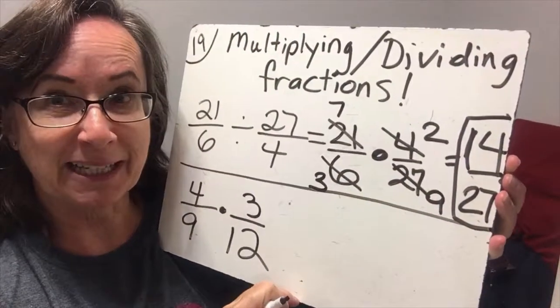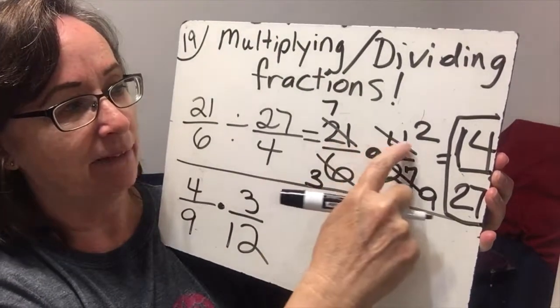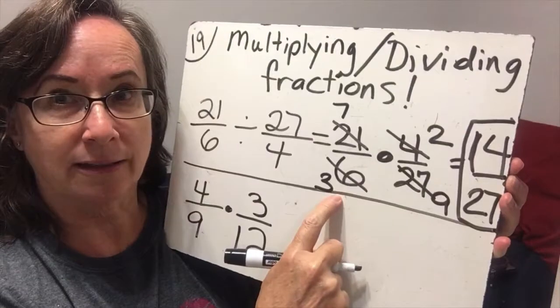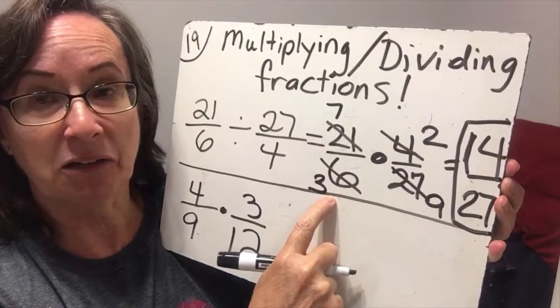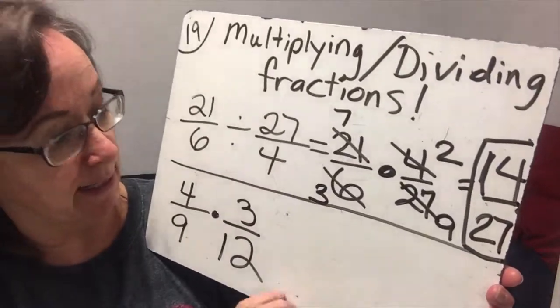Now, are there other ways I could do that? Because I wound up with 27. Could I have taken the 3 and the 2 and canceled the 6? Yes, I could have. I would have gotten the same answer. So 14 over 27 is the correct answer.